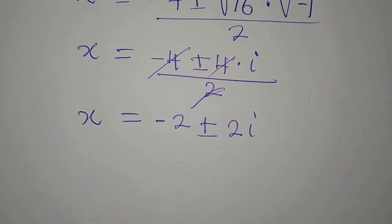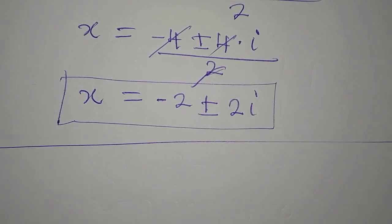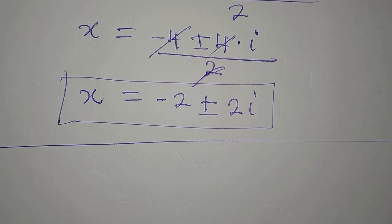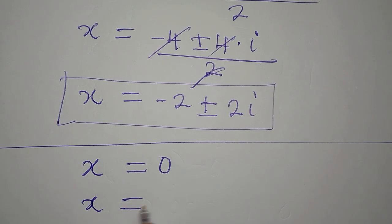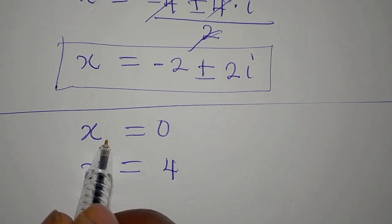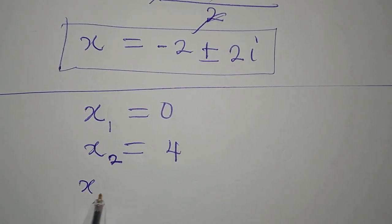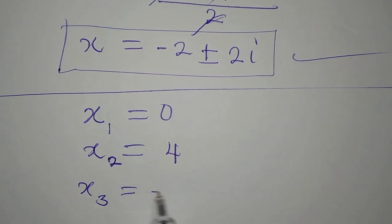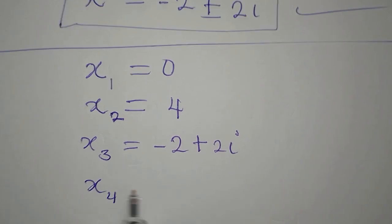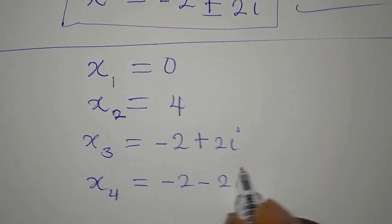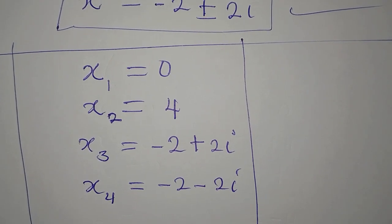Bringing all four solutions together: x₁ = 0, x₂ = −4 from the first equation, and from the second equation x₃ = −2 + 2i and x₄ = −2 − 2i. These are the four solutions to the given equation (x + 2)⁴ = 16.